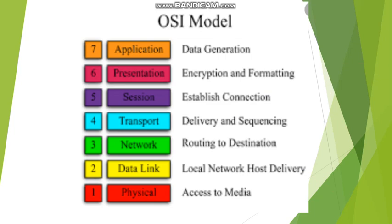We know that the OSI model is a 7-layer model and it is used to connect two systems which are entirely different in their architecture, but it is a theoretical model. Project 802 does not want to replace any part of the OSI model. Instead, it specifies the functions for the physical layer and data link layer to allow intercommunication between systems.